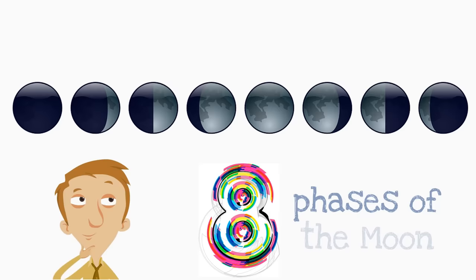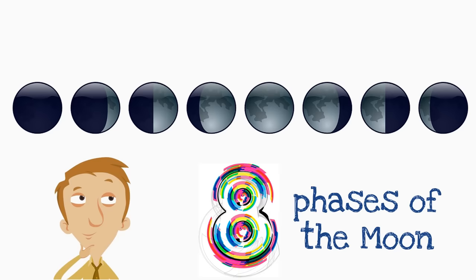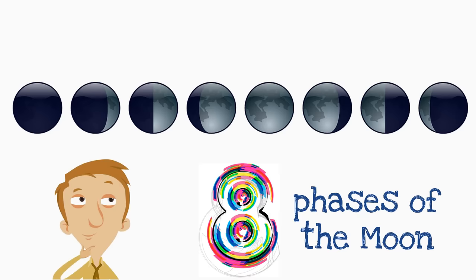Here are the phases of the moon. If you count them, you'll see there are eight phases of the moon. Notice in one phase, you don't see the moon at all. And in another phase, you can see the entire moon. So these eight phases have a big impact on what the moon looks like to us. Soon you'll know all eight of them.